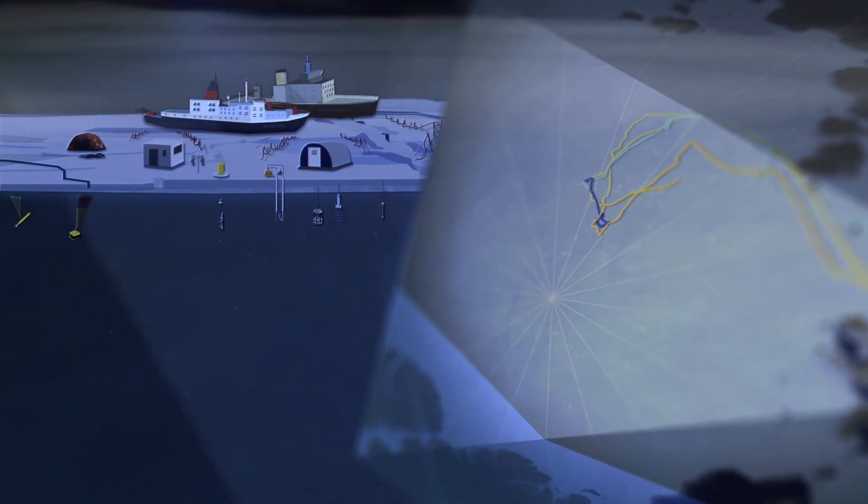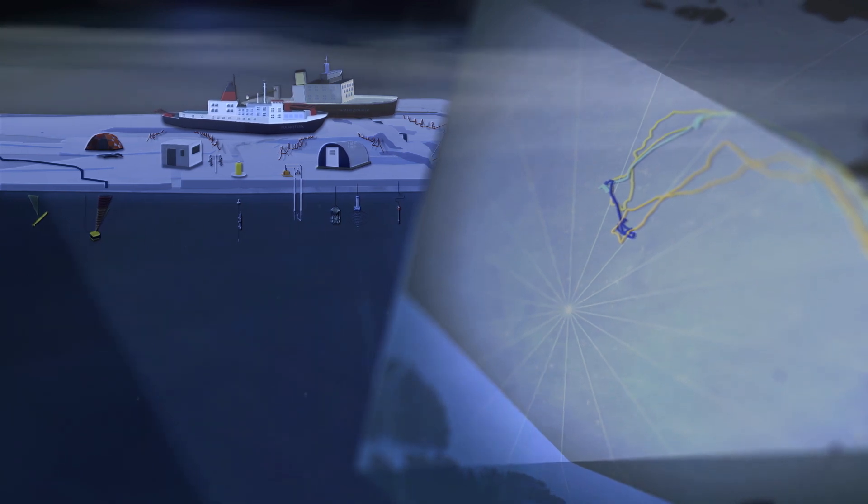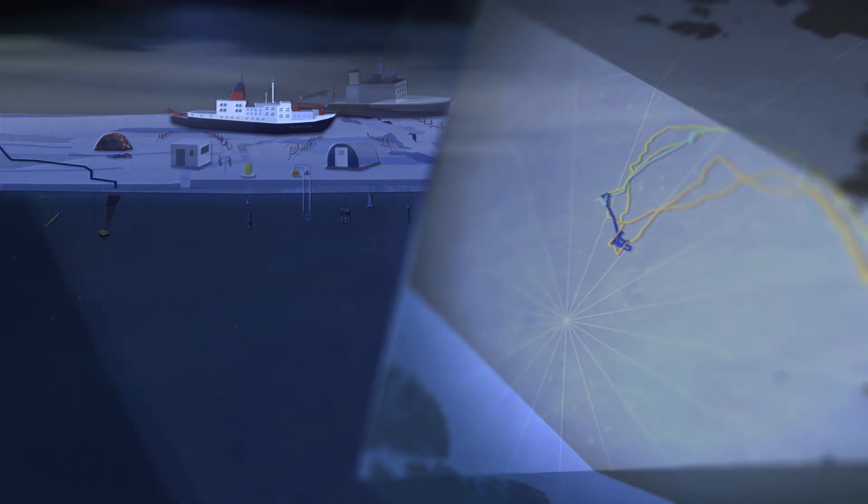Meanwhile, on some days, Polarstern drifts up to 25 kilometers.